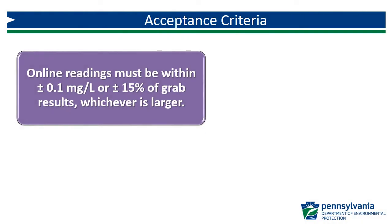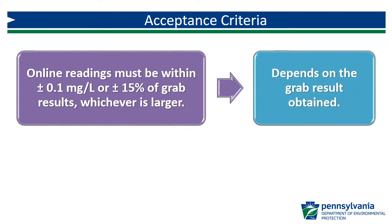According to Method 334.0, the acceptance criteria for comparative grab sampling is that the online analyzer reading must be within plus or minus 0.1 mg per liter or plus or minus 15% of the grab sample result, whichever is larger. Because the grab method is EPA-approved and both the analyst and equipment have been evaluated using primary standards, we can be confident in the results obtained through the grab sample analysis.